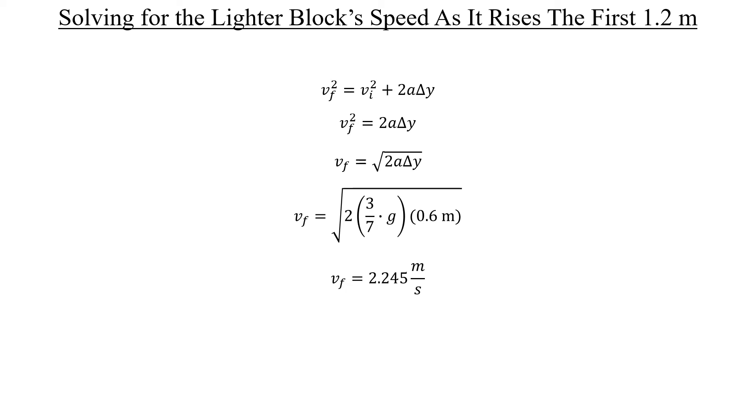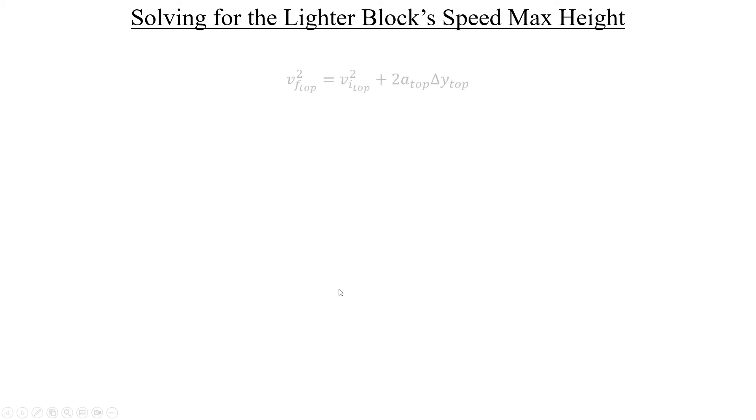So remember, the block is going to have to cover some additional vertical distance to bring this down to 0. So let's use another expression to figure out what that distance might be in the process of slowing down. Thankfully, it's the same exact expression, but I've included some subscripts where it says top to separate this from the previous expression that we had. We're not going to use the same numbers. This time, the initial velocity is the 2.245 meters per second, and the final velocity at the very top of y max is going to be 0.